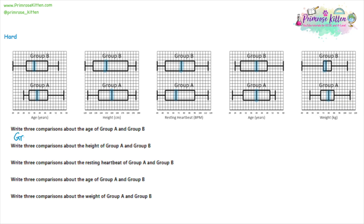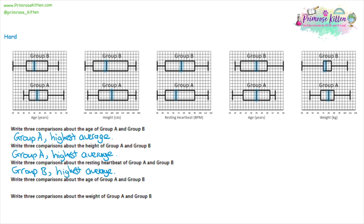Let's write the comparison for every median. In question one, group A has the higher average. In question two, group A is still higher than B. In question three, group B has the highest median — the blue line is more towards the right. In question four, they're both at 40 years old, so they have the same average. For question five, group A again has the highest average. I'd always use the median because it's one of the most important things, and it's commonly asked about specifically in real-life scenarios.